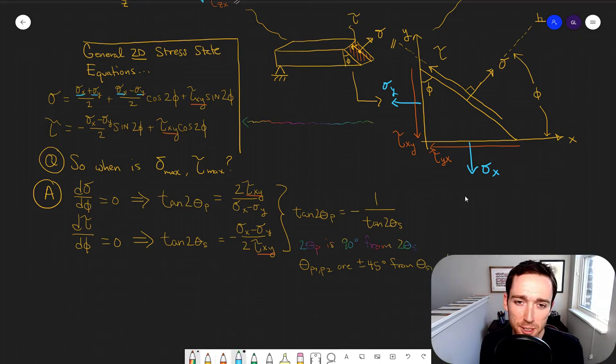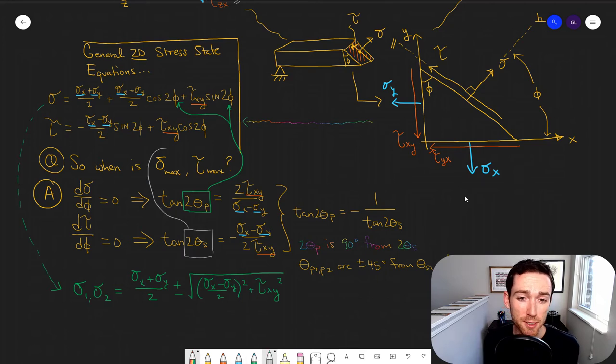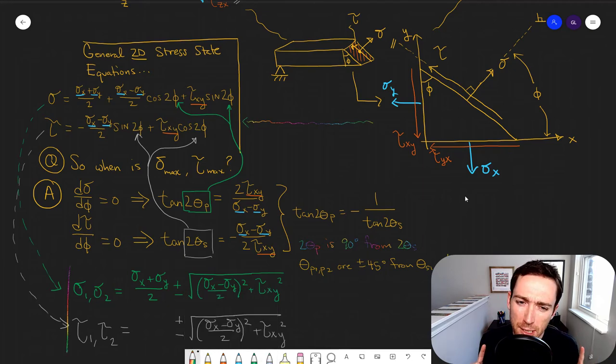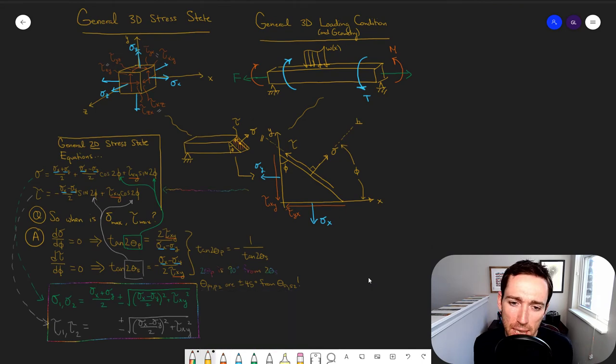And so what we can then do is we can take that plane of maximum normal stress, that theta p, and when we plug it into our general equation, those are just our principal stresses. We can do the same thing on the plane of max shear, and we get our extreme shear stresses in plane.